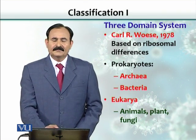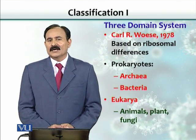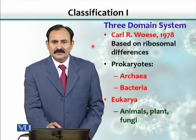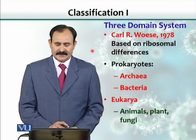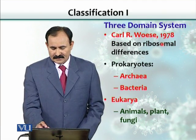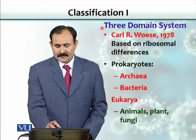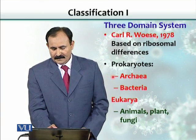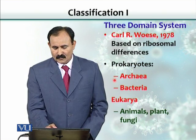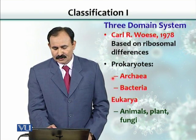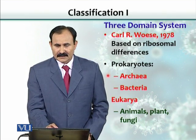As biotechnology tools allowed us to analyze nucleic acids, especially ribosomal RNA, lots of differences were found. Based on ribosomal RNA studies, Carl Woese in 1978 proposed three-domain systems rather than a five-kingdom system. He proposed three domains: Archaea, Bacteria, and Eukarya. Prokaryotes were subdivided into two groups — Archaea and Bacteria — which differ in various aspects, particularly in cell wall composition.